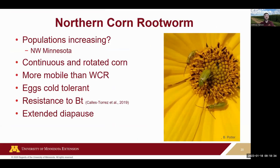From there we can jump over to corn rootworm — these are all Bruce's slides. We have two species to focus on. Northern corn rootworm: we're wondering about populations increasing in northwest Minnesota. As the name implies, it's more of a regional issue, but we can see more problems with northerns in northern parts of Minnesota. It's an issue in both continuous and rotated corn, and this is the one with extended diapause — the eggs can survive in the soil, making it resistant to crop rotation.